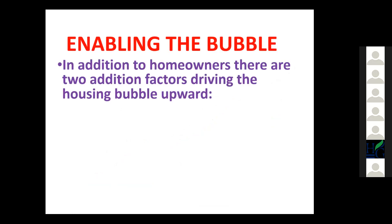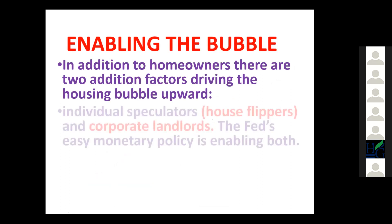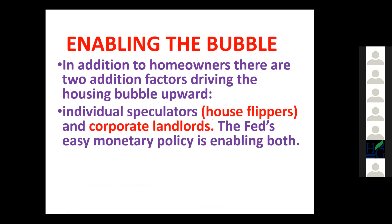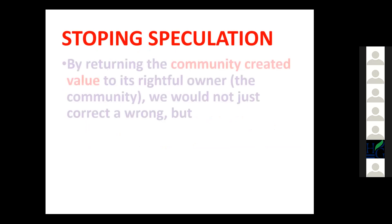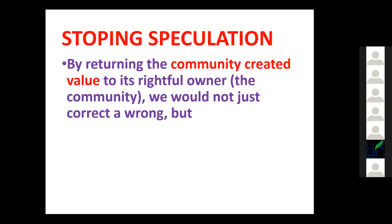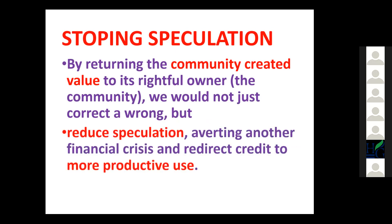Enabling this residential homeowner-type bubble are two additional factors: individual speculators called house flippers, and corporate landlords. We've seen more and more corporate purchasing of single-family homes, renting them out and concentrating ownership into a few major corporate owners. The Fed's easy monetary policy is enabling house flippers and corporate landowners to buy up residential real estate. Stopping speculation by returning the community-created value to the community would not just correct a wrong, but would reduce speculation, avert another financial crisis, and redirect credit to more productive use.